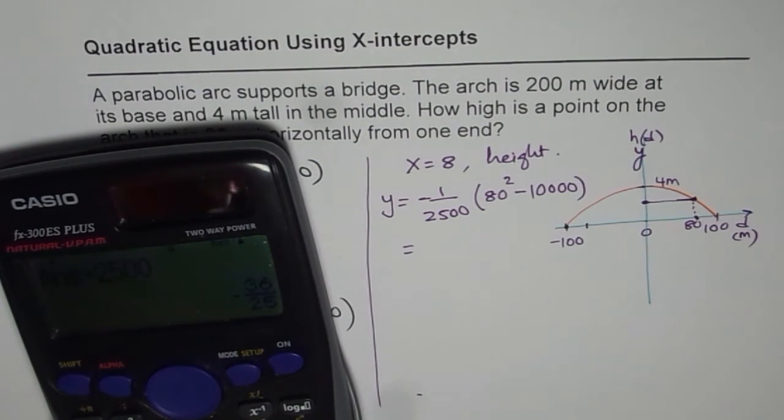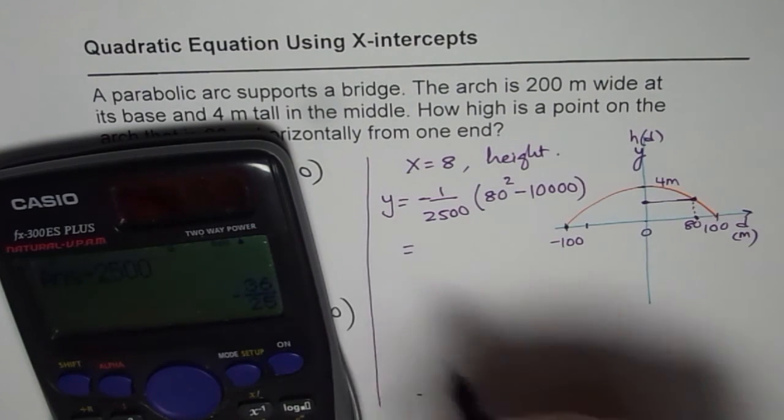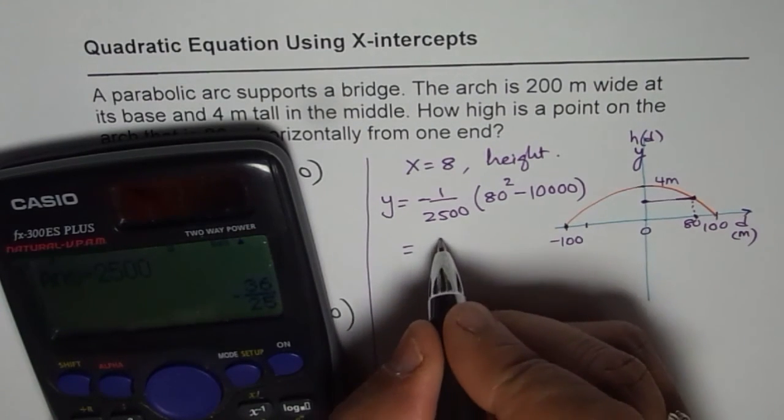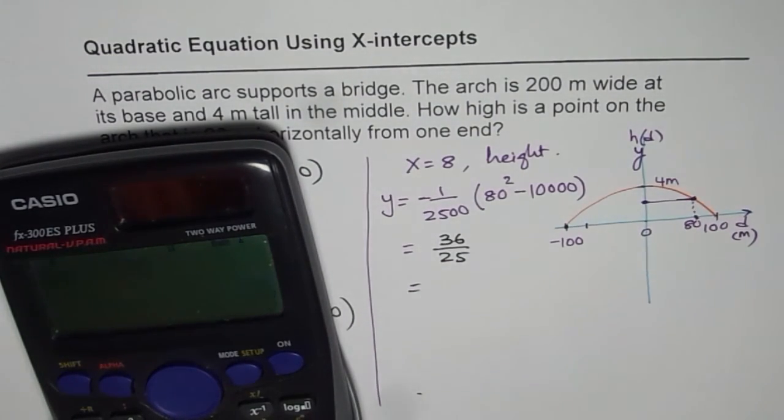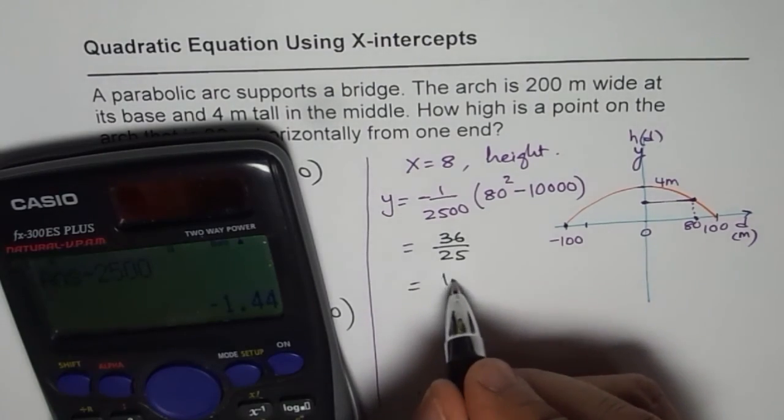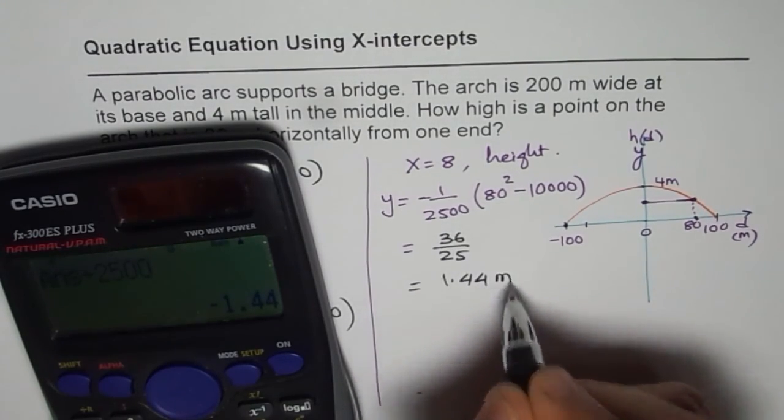Minus and minus will become plus because we are doing, and let's take the decimal value. So we can write this as equal to 36 over 25 or in decimals, it is equals to 1.44 meters.